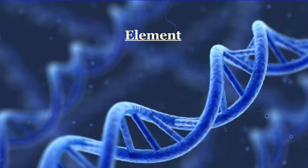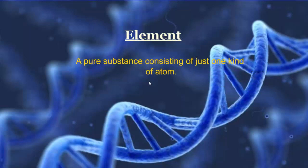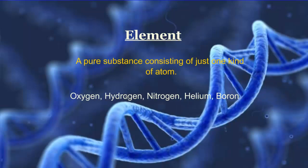The next word is element, which goes with atom. An element is a pure substance that consists of one kind of atom — just one type of atom. You'll recognize these from ninth grade science: oxygen, hydrogen, nitrogen, helium, boron. These are substances made up of just one kind of atom, found on the periodic table.